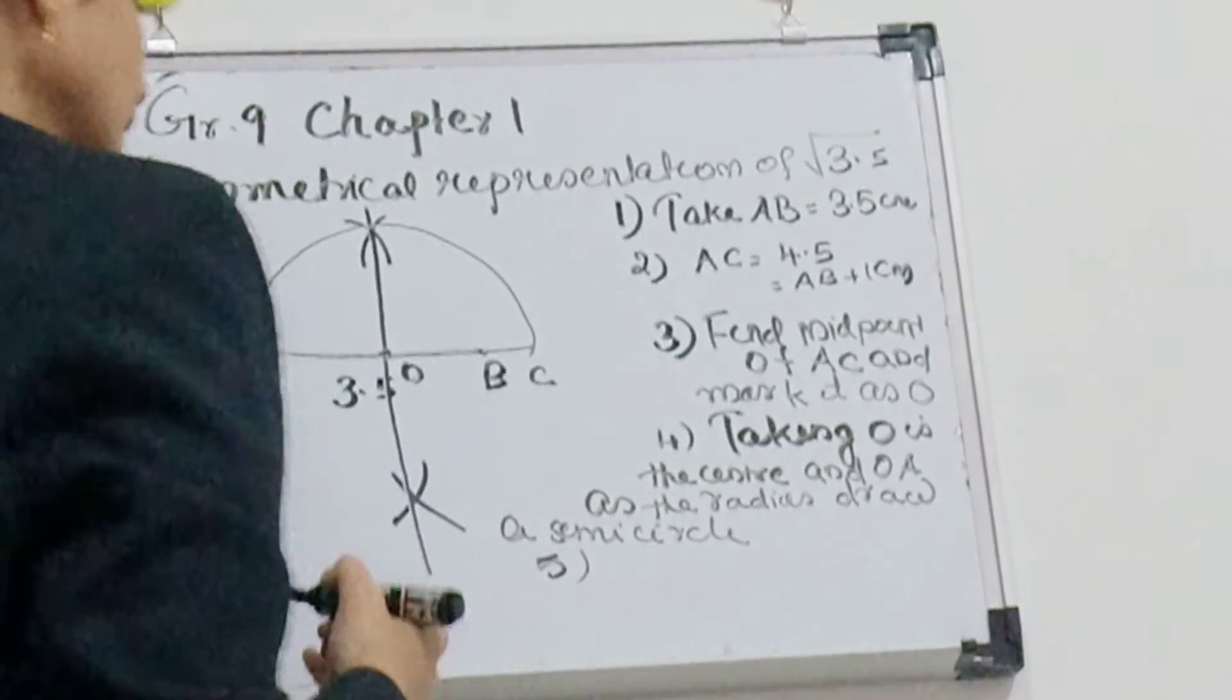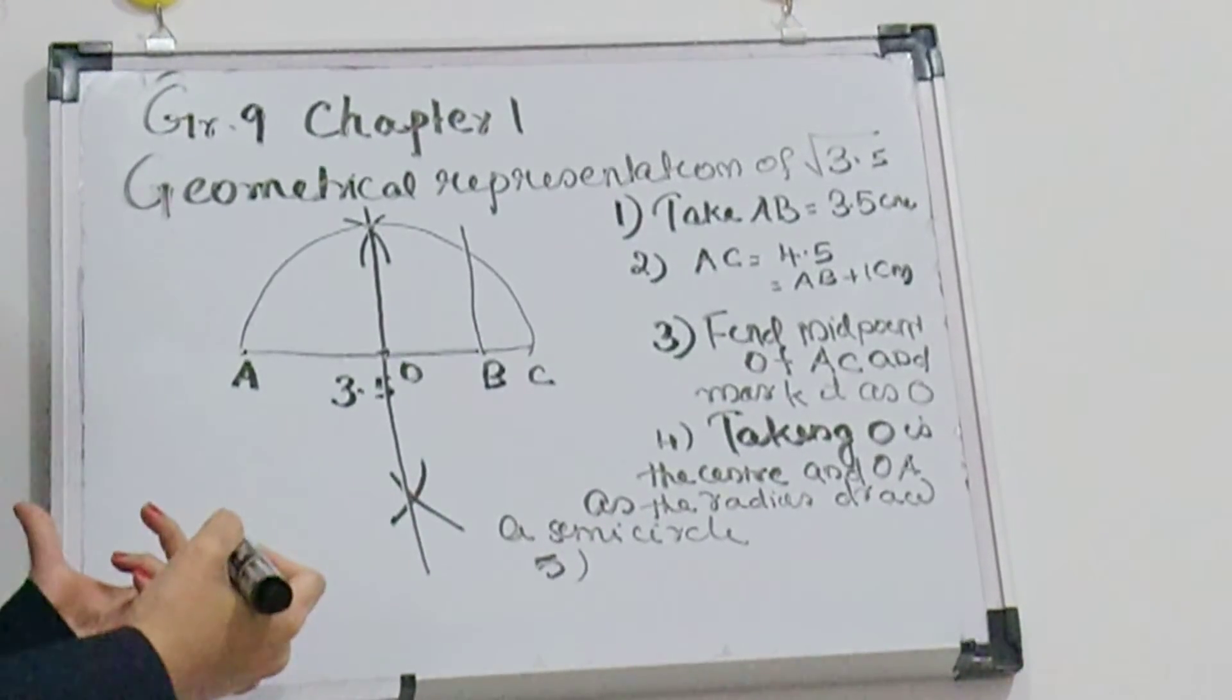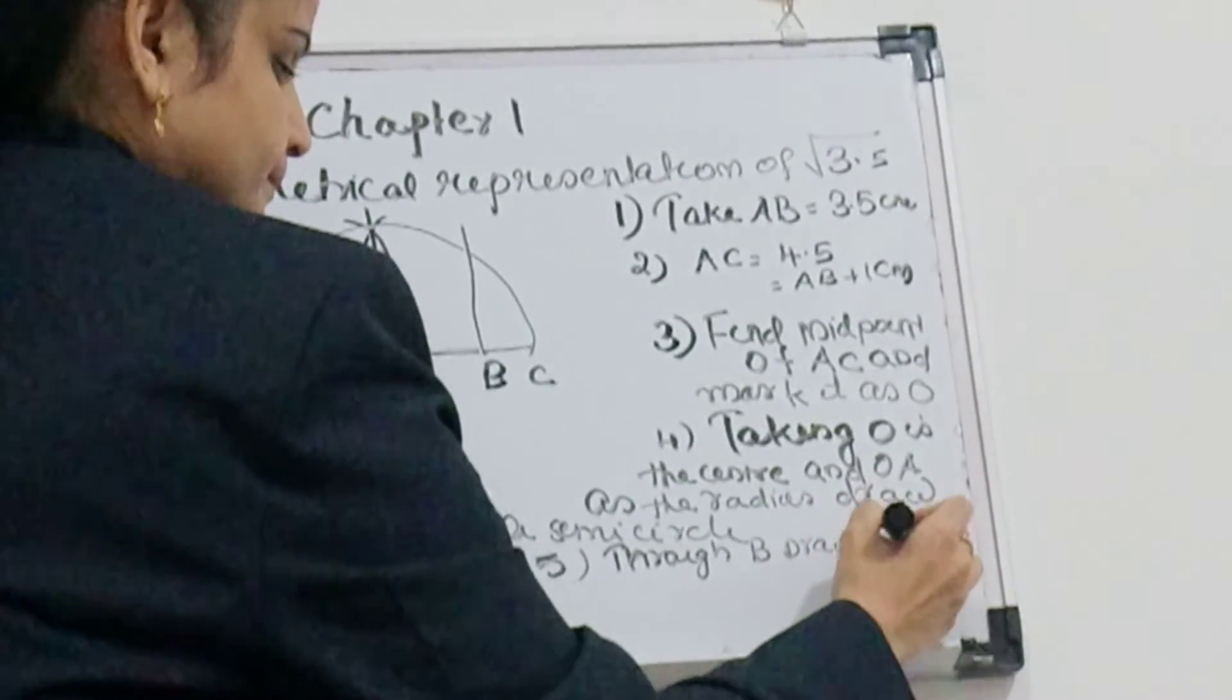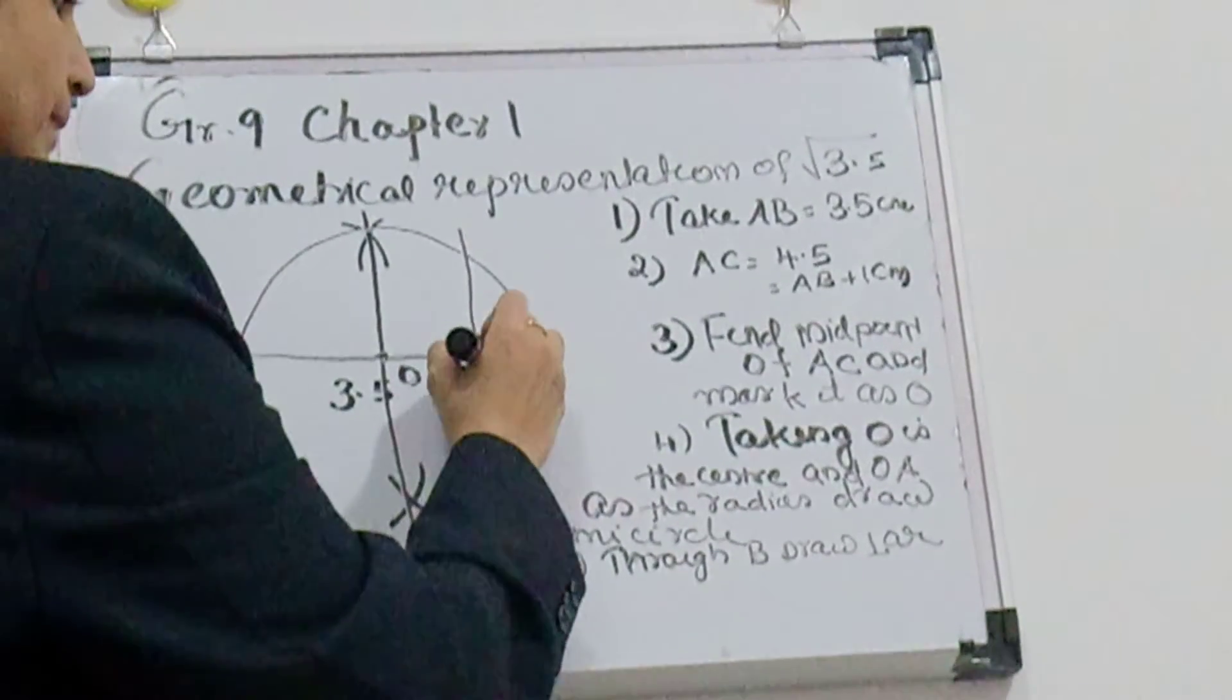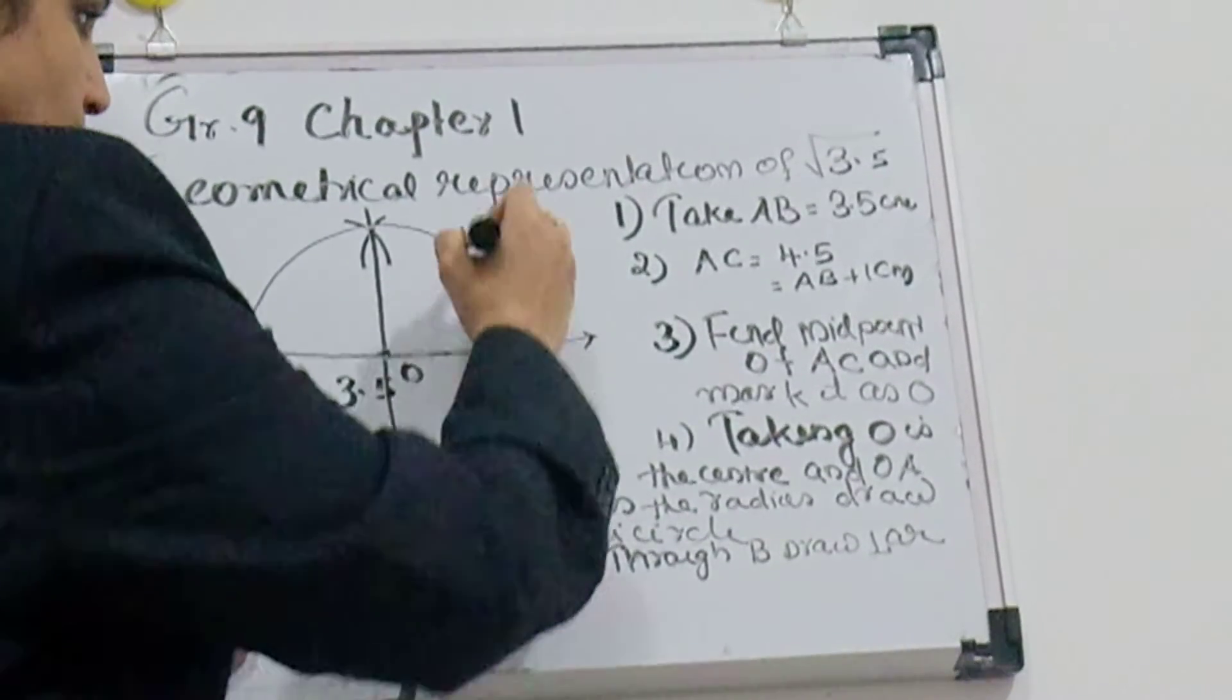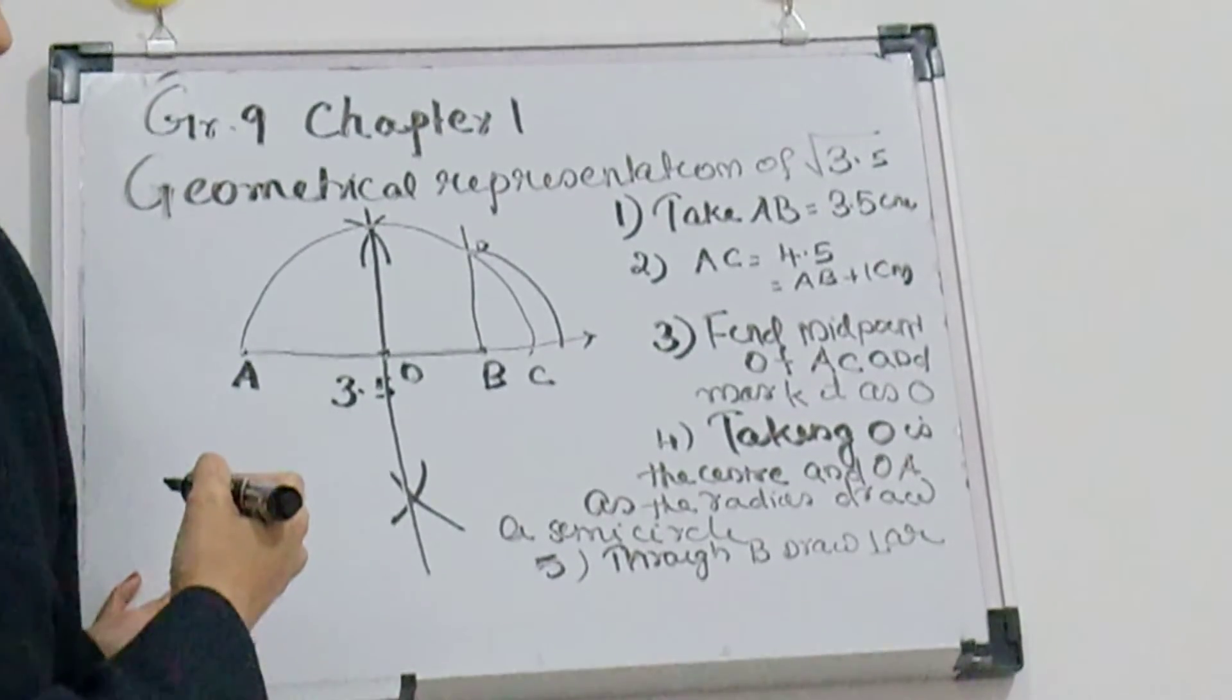Next step is through B draw a perpendicular. Using B as center, and here you mark it as D, and BD as the radius, you draw an arc. Using B as center and BD as radius, keeping the compass here and draw like this. So this is root of 3.5.